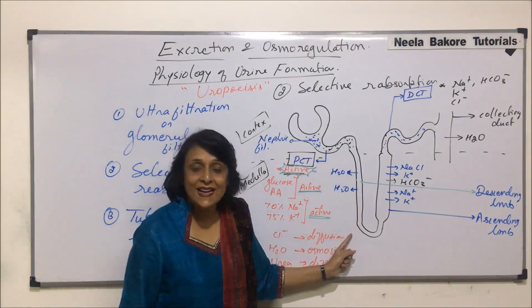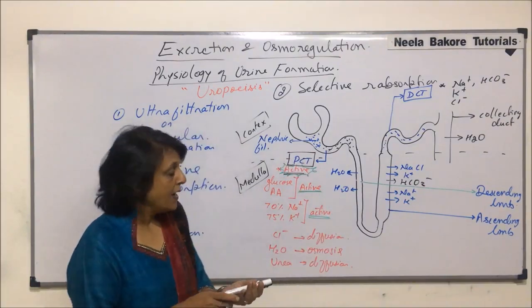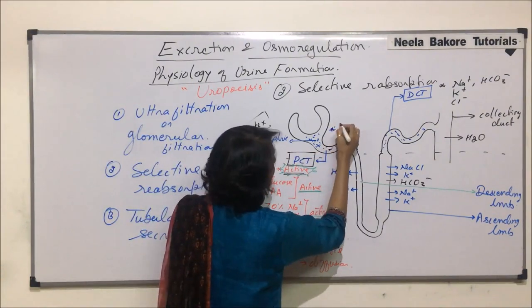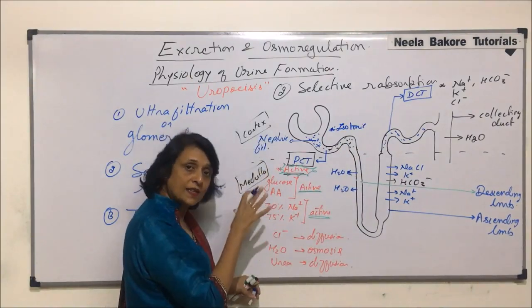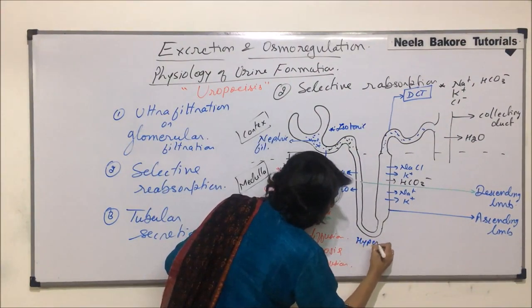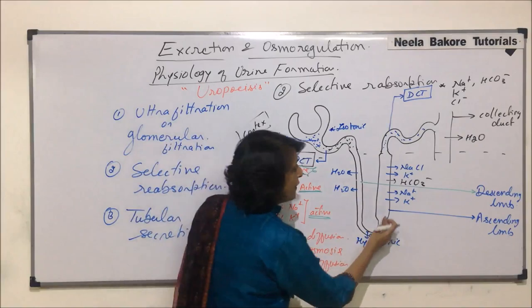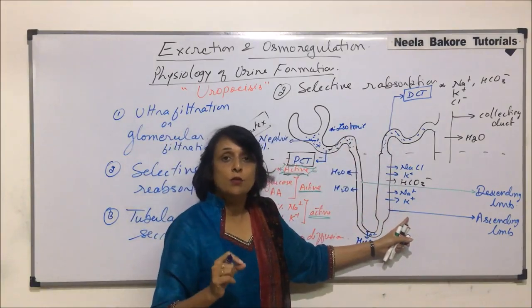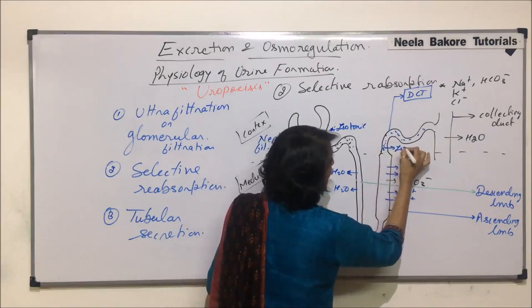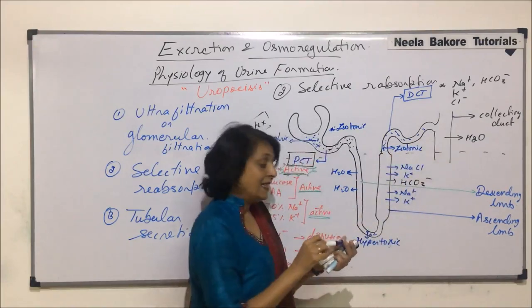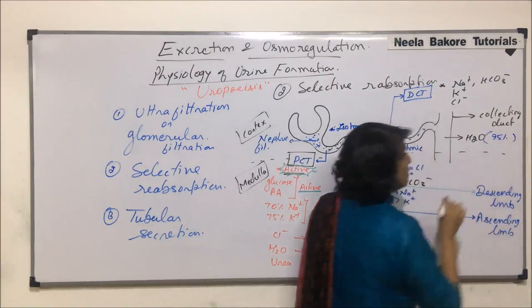The filtrate comes into the descending limb, which allows entry of only water, so only water gets absorbed and the liquid becomes hypertonic. When it goes up the ascending limb, solute is removed but solvent is not, so it becomes less concentrated and again isotonic. Then when it passes through the collecting duct, most of the water — about 95% of the water which is absorbed — is absorbed here.